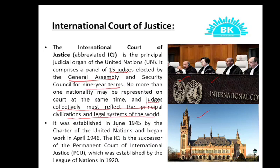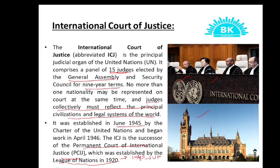The International Court of Justice was established in June 1945, and it is the successor of the Permanent Court of International Justice. There was a League of Nations before the UN, but the League of Nations was not so successful, especially because the US was not involved. In 1945, the League of Nations was revamped into the UN, and the Permanent Court of International Justice was reformed as the International Court of Justice.